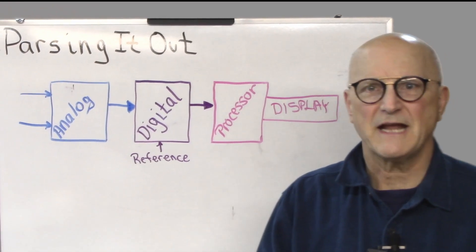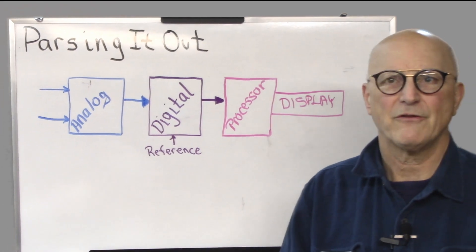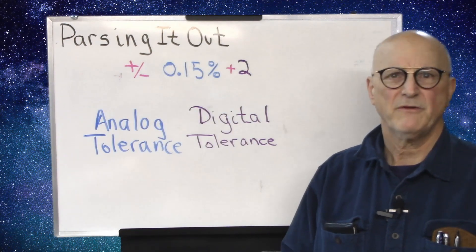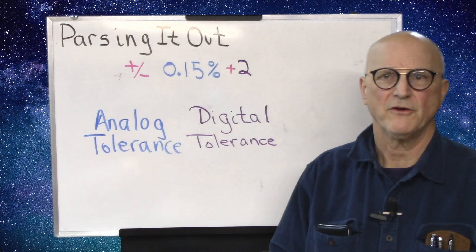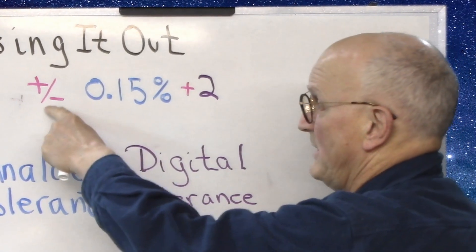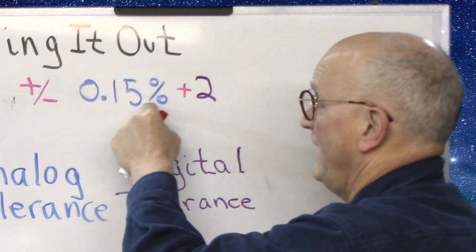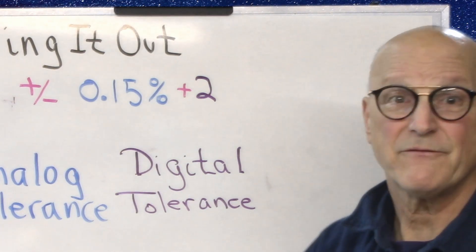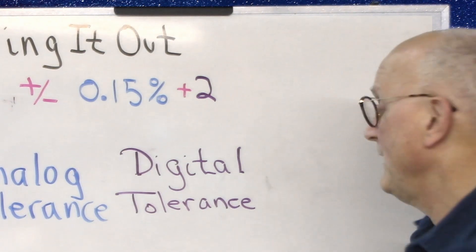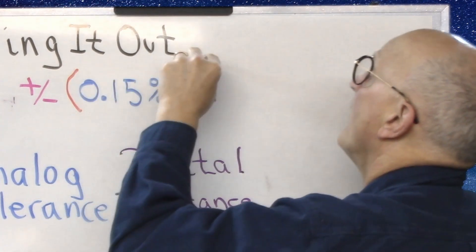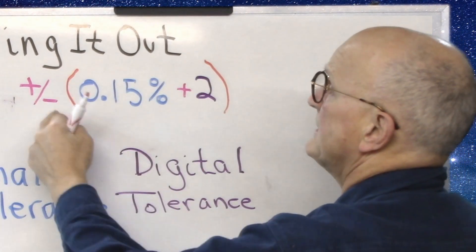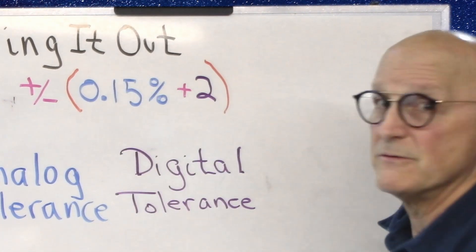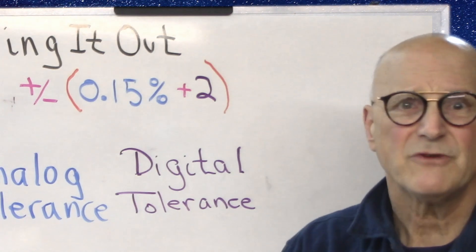Now, with this understanding, let's take a look at how this relates to the stated tolerances. As I said before, when we look at the user's manual and we see something like this, plus or minus 0.15 percent plus 2, it makes a lot more sense if we add the implied parentheses. So it becomes plus or minus this whole thing, 0.15 percent plus 2.